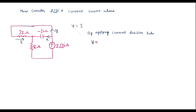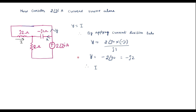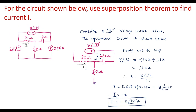By applying the current division rule: y = total current × opposite resistor / sum of resistors. Total current is 2∠90°. Now we are finding current y, which is flowing through the j2 ohm resistor, and current x is flowing through the -j1 ohm resistor. So the opposite resistor is -j1. Therefore, y = 2∠90° × (-j1) / (-j1 + j2) = 2∠90° × (-j1) / j1. Here j1 cancels, giving y = -2∠90° = -j2. Therefore I2 = -j2 amps.